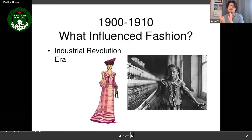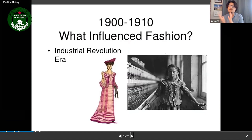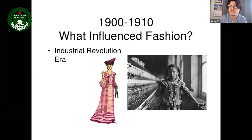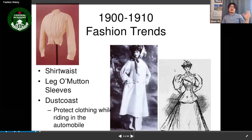What influenced the Edwardian era was the Industrial Revolution — workers and industry had a big influence. The fashion trend at that time included the shirt waist with a higher waist on shirts.